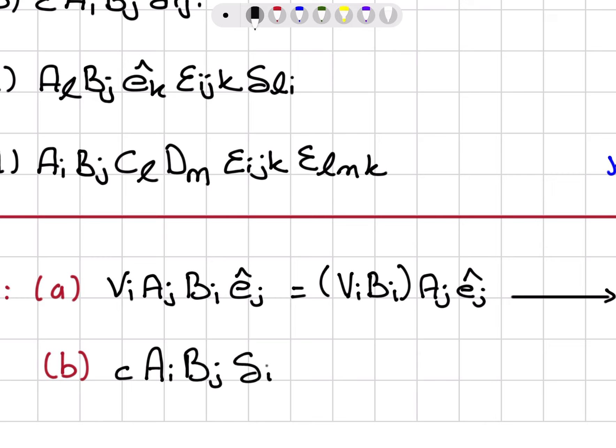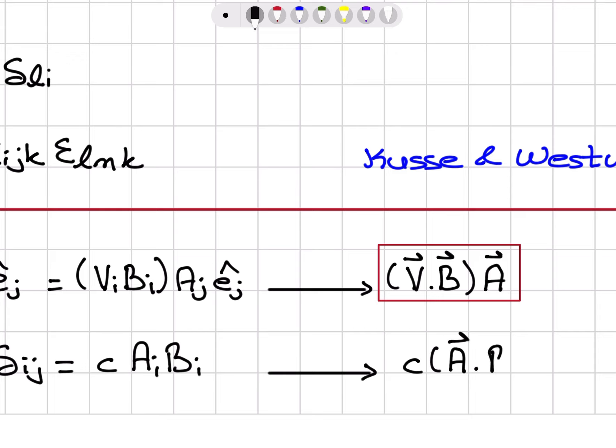I can recognize V_i B_i is the dot product of vector V with vector B. And A_j Ê_j are the components of vector A in the Ê_j direction, which gives me the vector A itself. So my answer is (V·B) A.